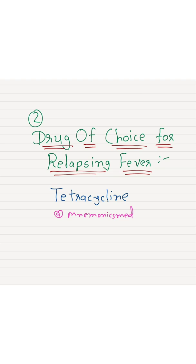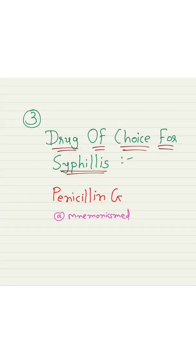The drug of choice for relapsing fever is tetracycline. You have to remember tetracycline for the drug of choice for relapsing fever. The drug of choice for syphilis is penicillin G. You have to remember penicillin G for the drug of choice for syphilis.